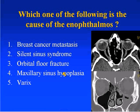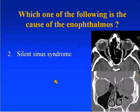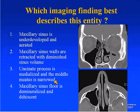About 60% said silent sinus syndrome, which is the correct answer. Which imaging finding best describes this entity? Number one, the maxillary sinus is underdeveloped and aerated; number two, maxillary sinus walls are retracted with diminished sinus volume; number three, the uncinate process is medialized and the middle meatus is narrowed; or number four, maxillary sinus floor is demineralized and dehiscent. Most responded that maxillary sinus walls are retracted with diminished sinus volume — that is correct.